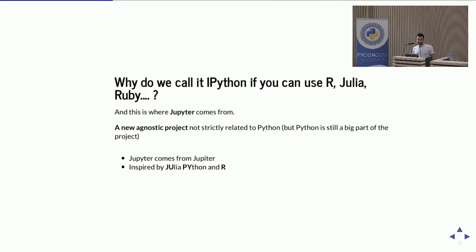The problem was this huge project was not just used by the Python community. So why call it just Python? They came up with the new name 'Jupyter' — from the planet Jupiter, but also inspired by the main languages they were using at the time: Julia, Python, and R.